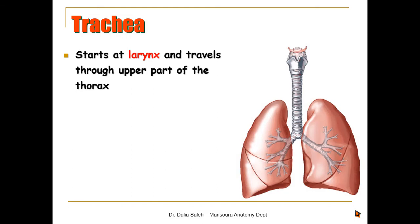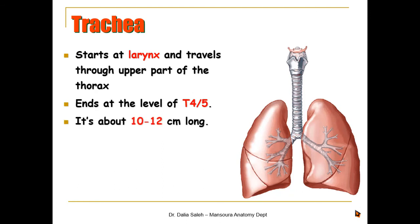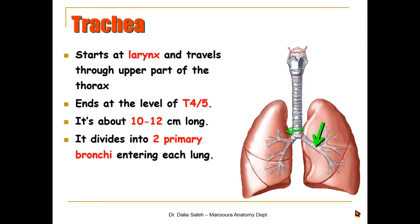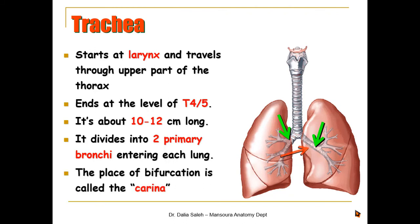The trachea starts from the larynx and travels through the upper part of the thorax, ending at the level of the disc between the fourth and fifth thoracic vertebrae. It is about 10 to 12 centimeters in length and divides at that level into two primary bronchi, each one entering its corresponding lung.